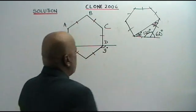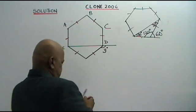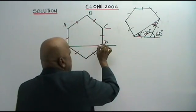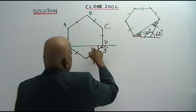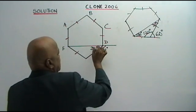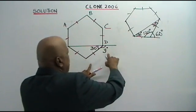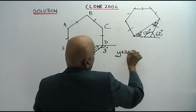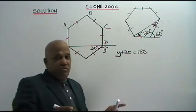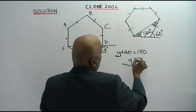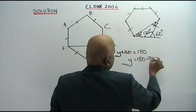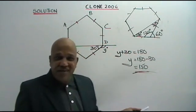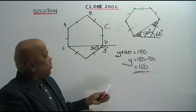Just remember this. What is the value of Y? If you look carefully, this is a regular hexagon. Therefore, this interior opposite angle is 30 degrees. So Y plus 30 is a straight line: Y plus 30 is equal to 180. Therefore, Y equals 180 minus 30, which gives you 150. That is your answer — the value of Y.